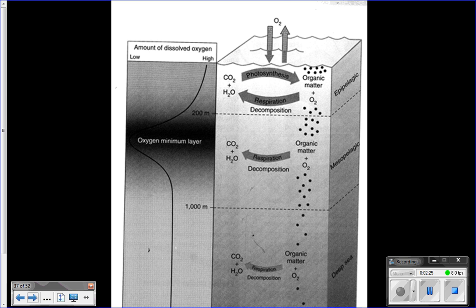As you go down into the mesopelagic zone, these little black dots represent organic matter — the food. You still have respiration and decomposition going on; there's enough food to support lots of animals, so cellular respiration and decomposition are occurring to a larger degree than at the surface. But notice what you don't have: there's no way for oxygen to get back into the water. So all of this respiration and decomposition is sucking the oxygen out of the water at that level.